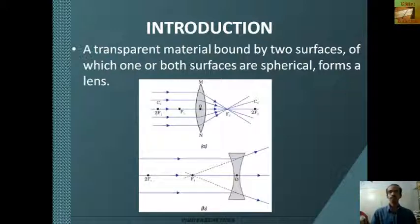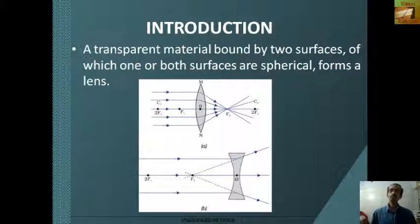Whenever a ray of light parallel to this principal axis is incident on a convex lens, it converges at a point and that point is known as the principal focus. In case of concave lens, it is the point at which the rays parallel to the principal axis appear to diverge from, as shown in this figure.